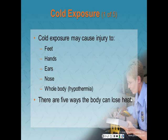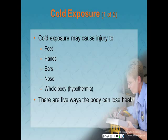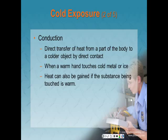The first topic is cold exposure. The body's temperature is maintained within a very narrow range for the body's chemistry to work efficiently. If the body or any part of it is exposed to a cold environment, these mechanisms may be overwhelmed. Cold exposure may cause injury to the feet, hands, ears, nose, or the whole body — this is called hypothermia. There are five ways the body can lose heat. The first is conduction: a direct transfer of heat from a part of the body to a colder object by direct contact. Heat can also be gained if the substance being touched is warm.